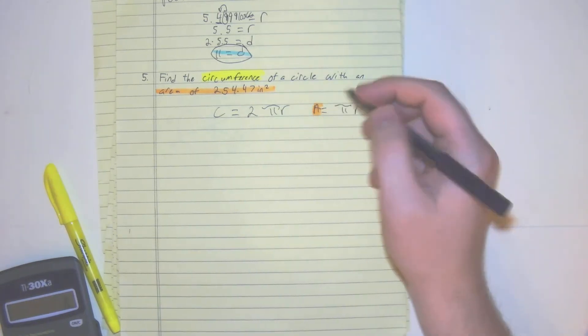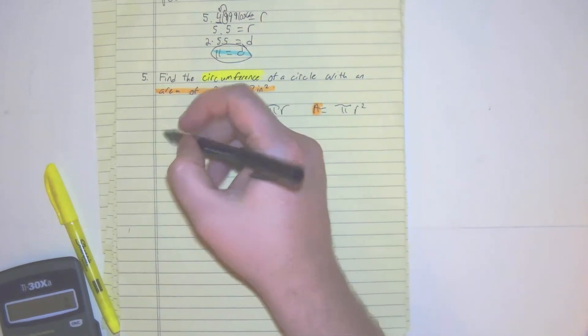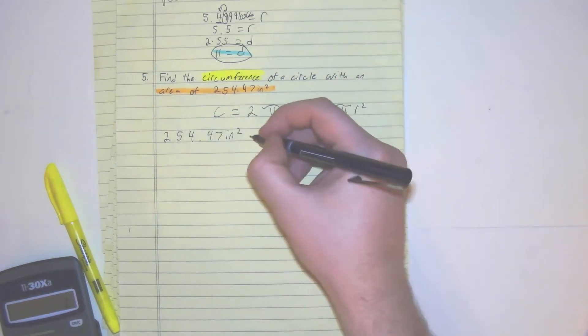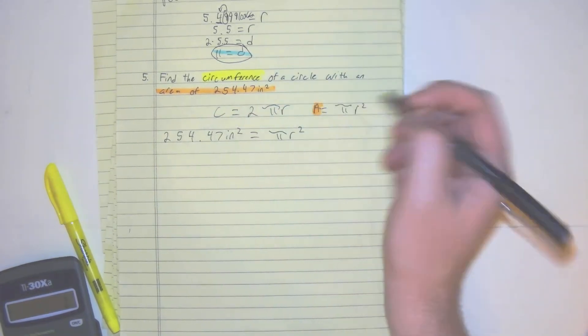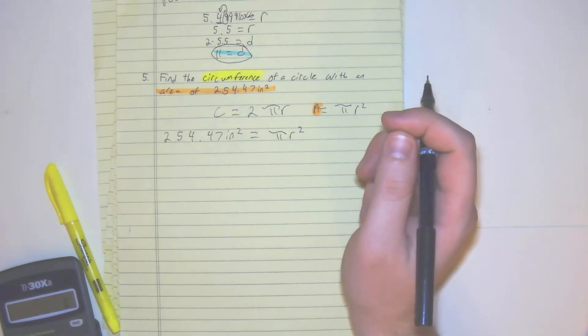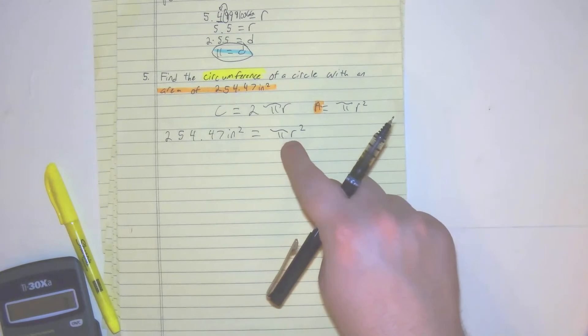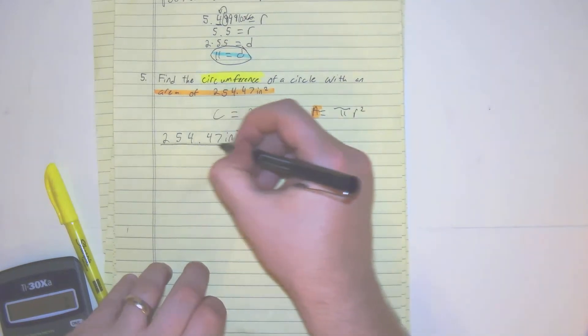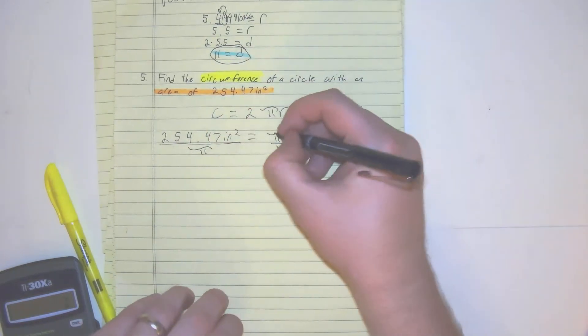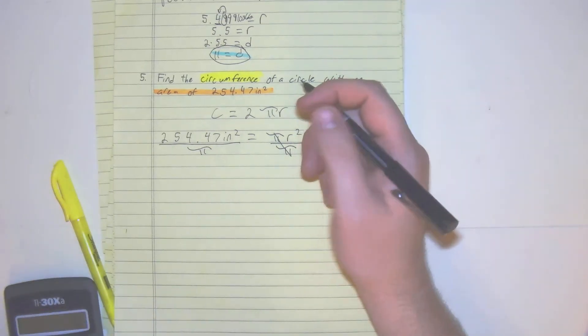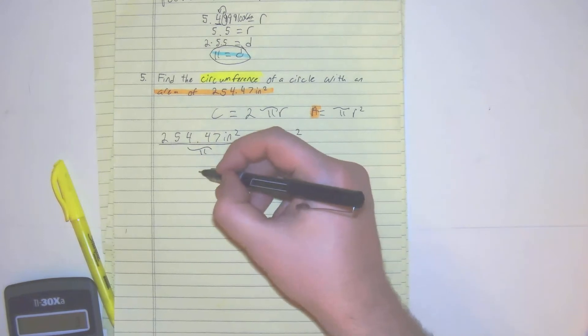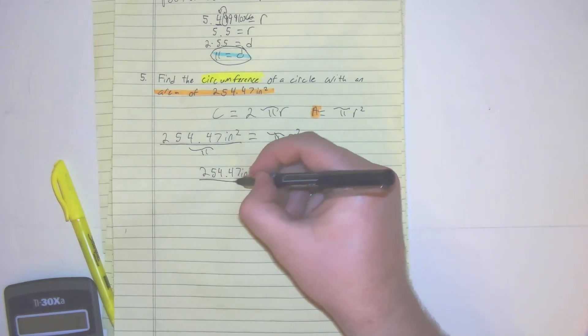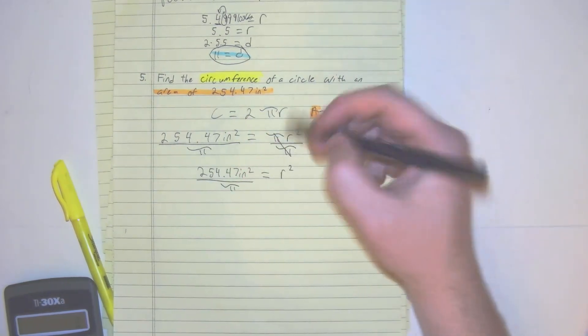So we have 254.47 inches squared equals pi r squared. So what we know is that the inverse of multiplication is division. So we divide by pi. So we get r squared equals 254.47 inches squared divided by pi. Just keeping that there.